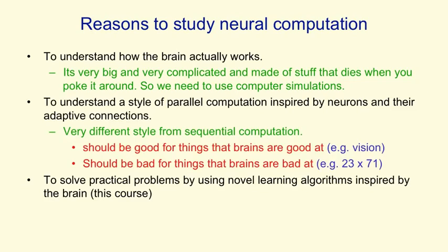The second is to understand a style of parallel computation that's inspired by the fact that the brain can compute with a big parallel network of relatively slow neurons. If we can understand that style of parallel computation, we might be able to make better parallel computers. It's very different from the way computation is done on a conventional serial processor, and it should be very good for things that brains are good at, like vision.